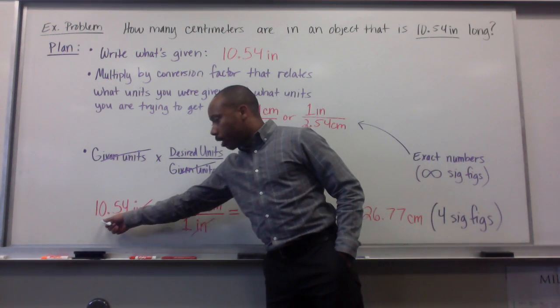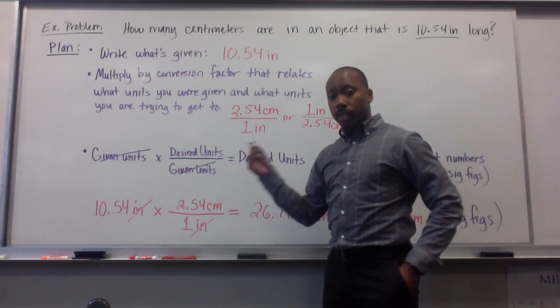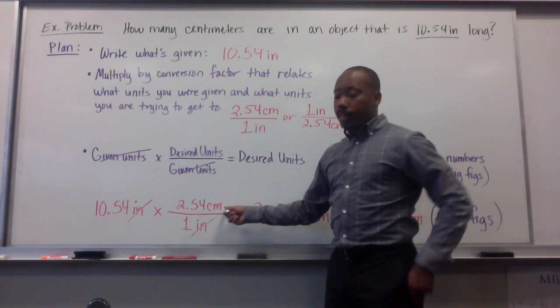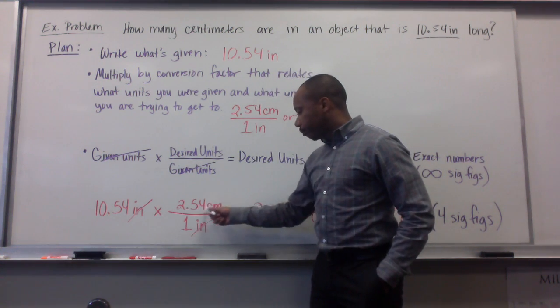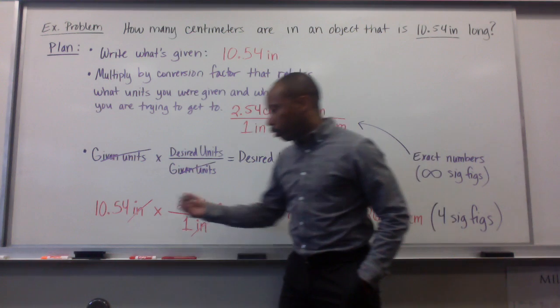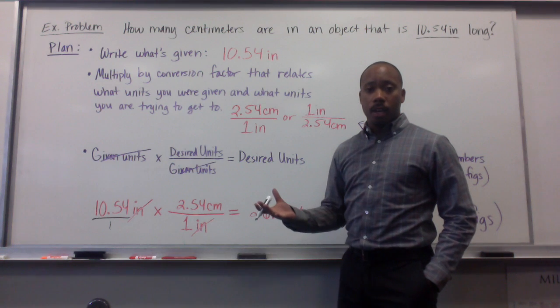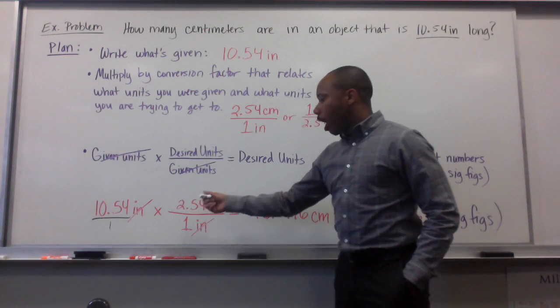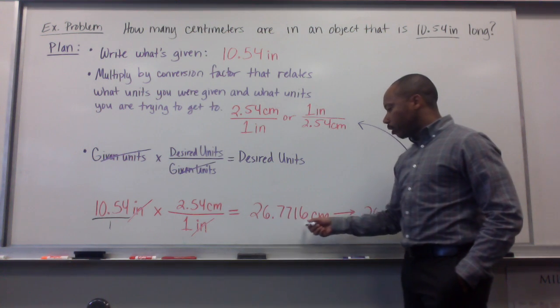We start with what's given to us, 10.54 inches. We multiply times the conversion factor that relates inches to what we're trying to get to, centimeters. We put inches in the denominator so that it cross cancels with the inches here, leaving you with the units that you're desiring, which are centimeters. In this case, you simply multiply across. This is understood as 10.54 inches over one. So we have 10.54 times 2.54 centimeters. Inches have canceled, leaving us with 26.7716 centimeters.